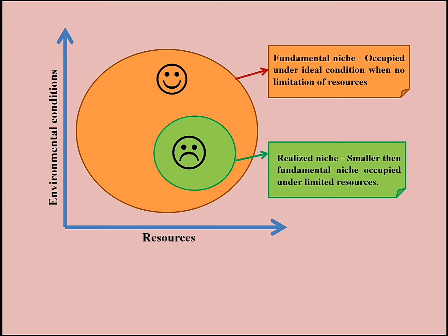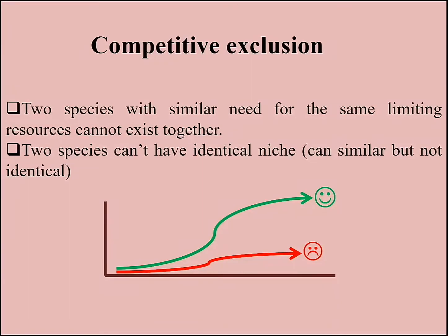On the other side, realized niche represents the actual set of environmental conditions under which an organism exists — meaning there are limitations on resources and the presence of competitors. The realized niche is always smaller compared to the fundamental niche.